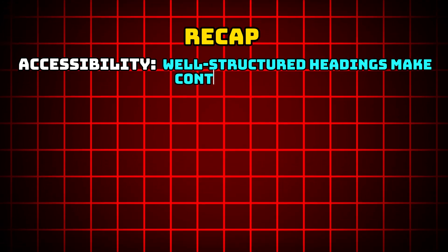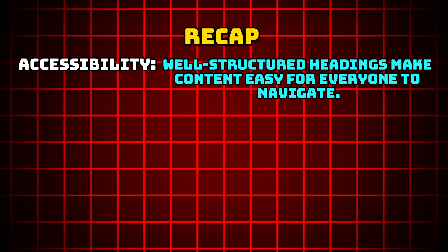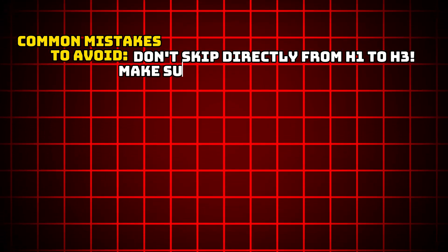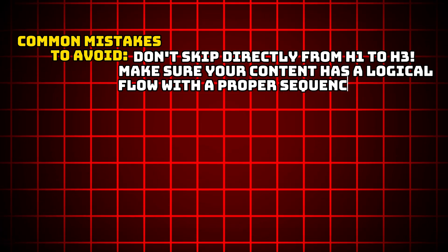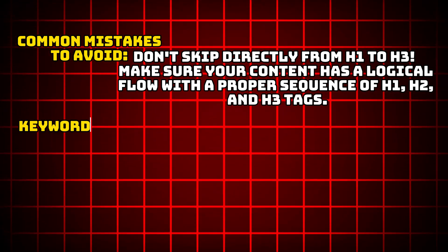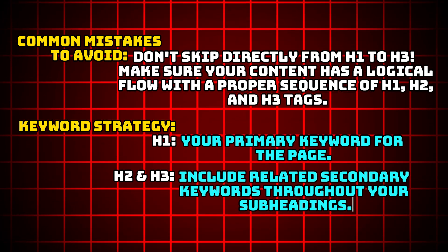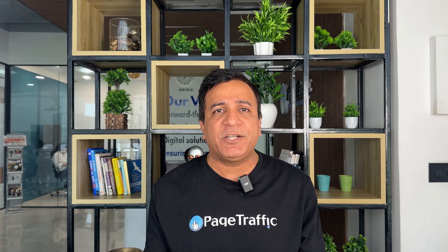Conclusion — header tags for success. Remember, optimizing your H1, H2 and H3 tags isn't just about formatting; it's a crucial strategy for improving both user experience and SEO performance. Here's the recap: accessibility — well-structured headings make content easy for everyone to navigate. Search engine clarity — header tags help search engines understand the hierarchy of your content. Common mistakes to avoid: don't skip directly from H1 to H3; make sure your content has a logical flow with a proper sequence of H1, H2 and H3 tags. Keyword strategy: assign your primary keyword to the H1 tag, and include related secondary keywords throughout your H2 and H3 subheadings. Share these tips with your developers and content creators to make sure your entire website benefits from strategic header tag usage.